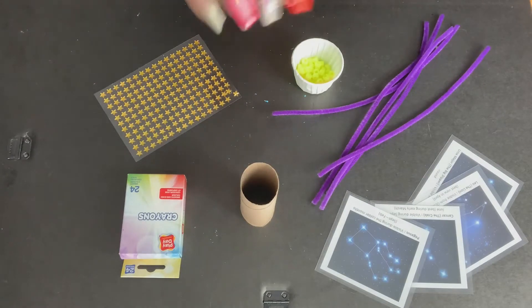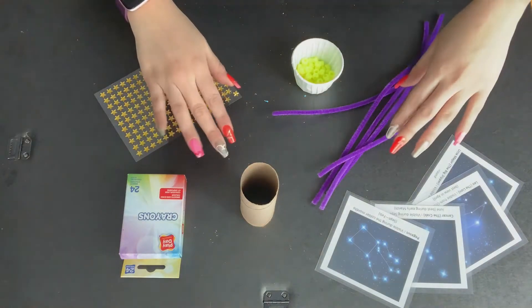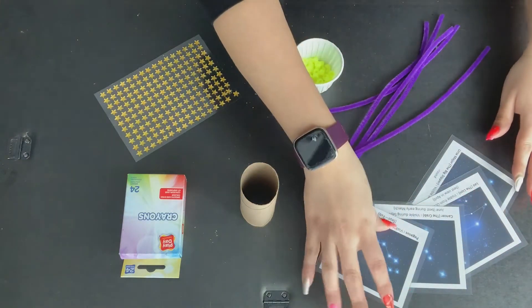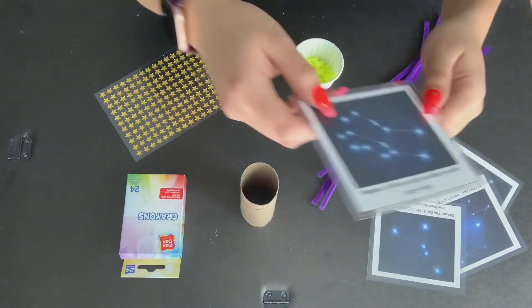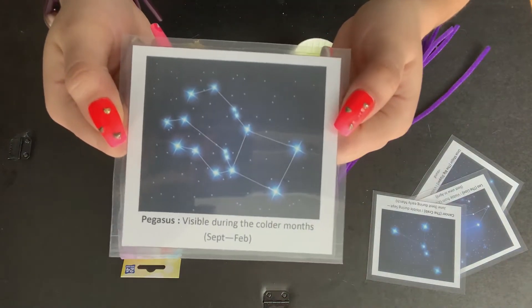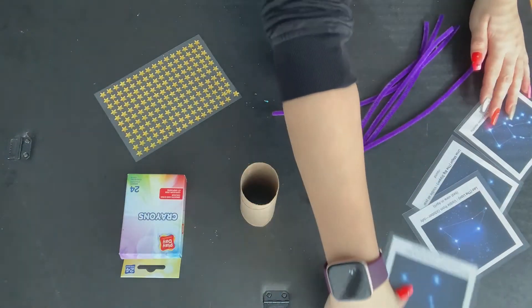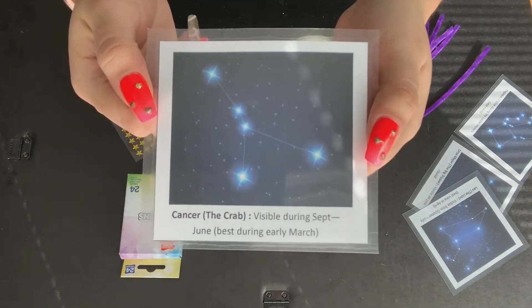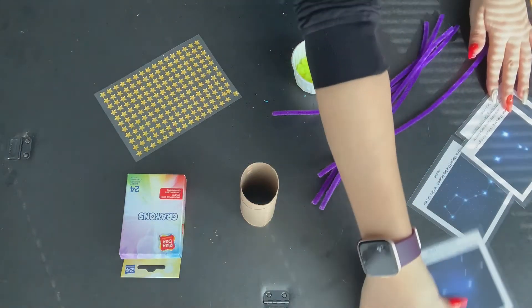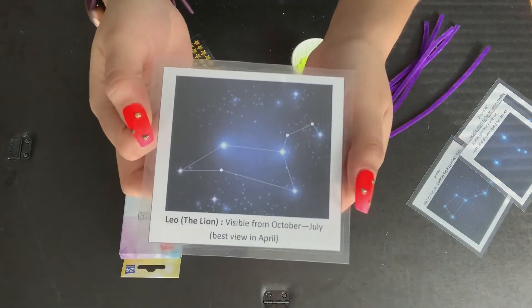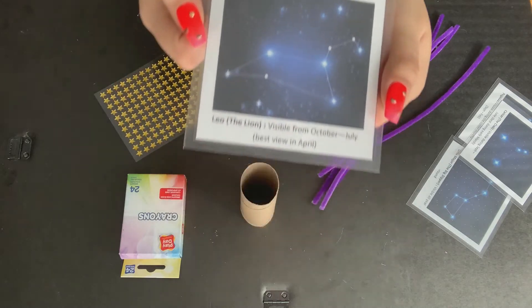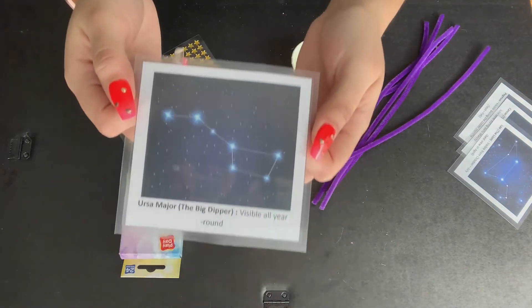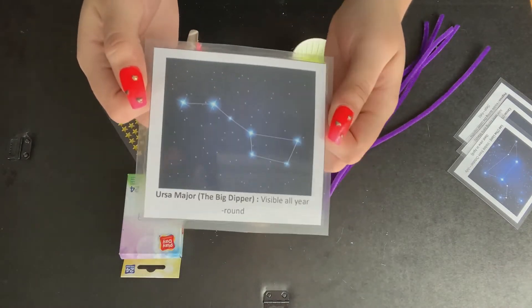Welcome to our constellation kit video where I'm going to show you what you get in your kit. Here we have some constellation cards which are filled with constellations like Pegasus, Cancer the Crab, Leo the Lion, and the Big Dipper also known as Ursa Major.